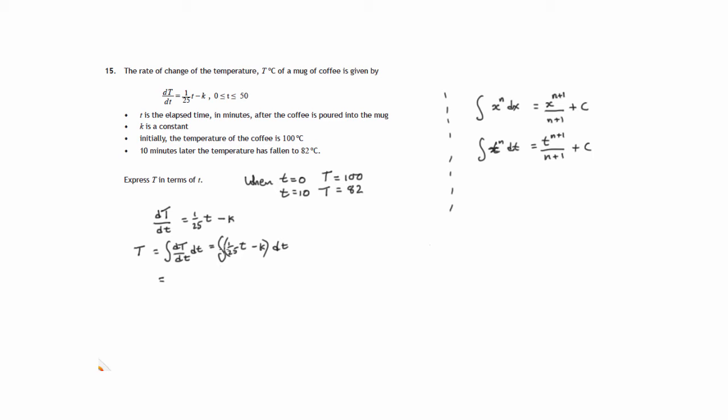This has got a number at the front of it. It just sits there, a at the front. It doesn't affect things much. So let's integrate. So we've got a number that sits there, a 25th. t to the power 1, we increase that to t squared and divide by the new power.